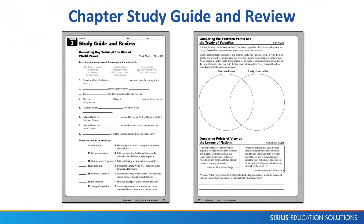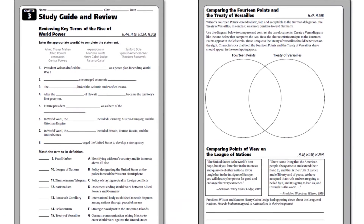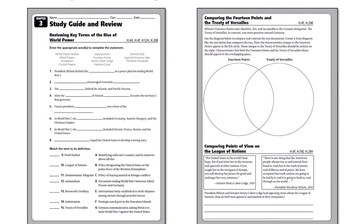At the end of each chapter is a study guide and review that provides non-multiple choice practice in the key facts that students need to remember. These activities also focus on the tested social studies skills and are an efficient way to reinforce information that can appear in dozens of STAR test questions.